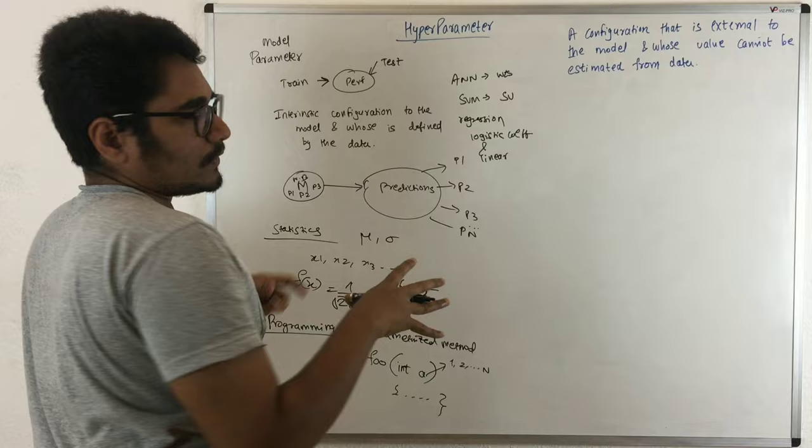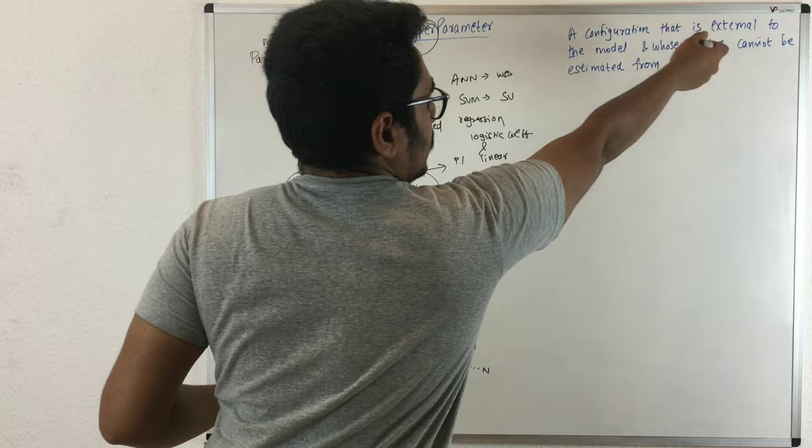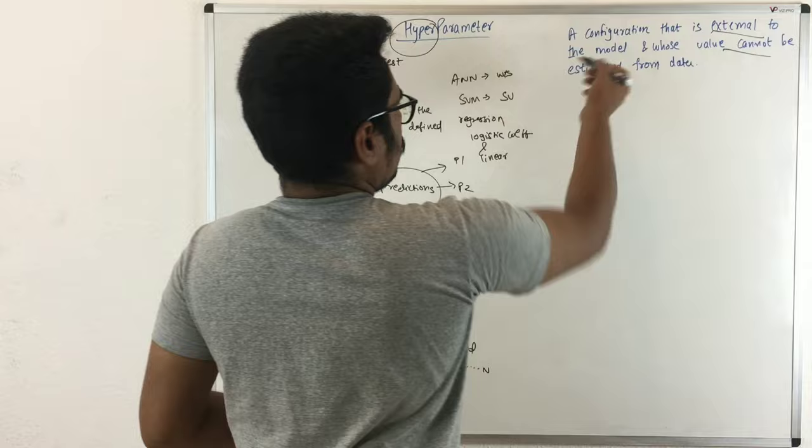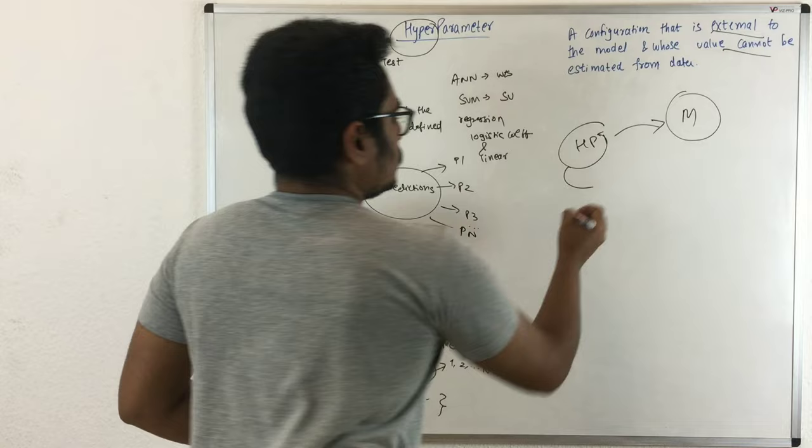Now let's deal with the term hyperparameter - it has one prefix before the term parameter. A hyperparameter is a configuration that is external to the model and whose value cannot be estimated from the data. You provide it externally to the model. Hyperparameters have three key characteristics.